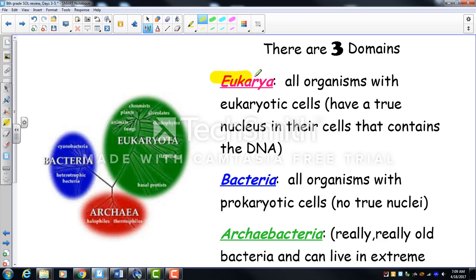There are three domains. Eukarya includes organisms with eukaryotic cells — cells with a true nucleus where DNA is found. Most things you see outside are members of this domain. The Bacteria domain includes all bacteria, which are prokaryotic — their DNA floats in the cytoplasm. Examples include strep, staph, and even the good bacteria in your stomach.